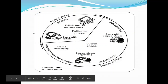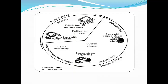Looking at the estrus cycle diagram: during the follicular phase, the dominant hormone is estrogen, the ovary has a developing follicle, and ovulation occurs when the follicle ruptures releasing the ovum. Right after ovulation, progesterone becomes the dominant hormone — this is the luteal phase, where the ovary has the corpus luteum. If the animal does not become pregnant, the corpus luteum will regress via prostaglandin F2-alpha.